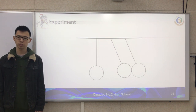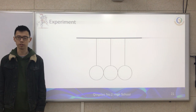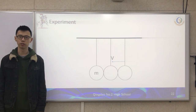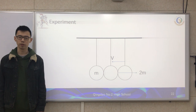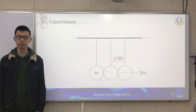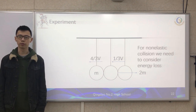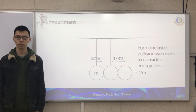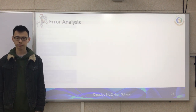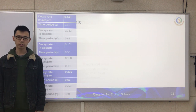But if we use hot glue to connect the first two balls, they swing together as a whole part with a common velocity V and a combined mass of 2M. So the connected part will have a velocity of 2/3 V, and the third ball will have 4/3 V. If we want to analyze a non-elastic collision, we also need to consider energy loss.